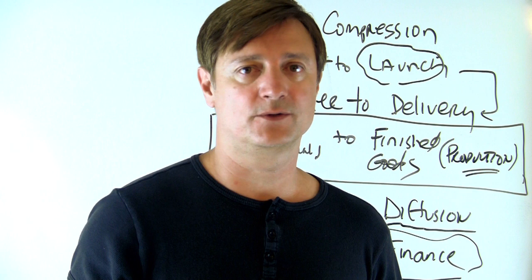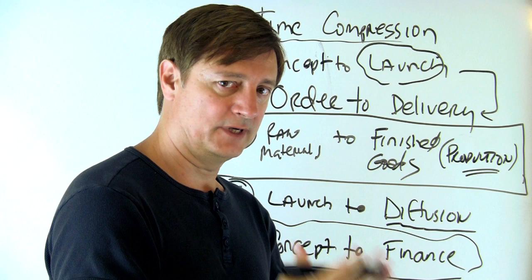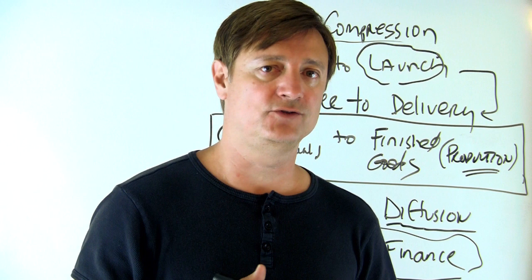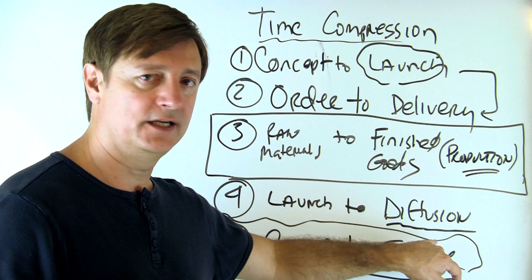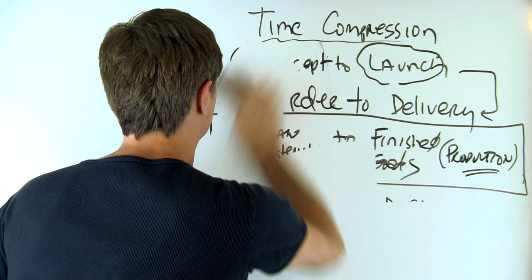If you're in a large corporation, sometimes that's not a problem, but even corporations have to go through budgets and different components. So if you're using time compression and able to develop products from concept to launch quicker, you've streamlined order to delivery, you've figured out how to produce the product much quicker than your competitors, you've figured out the components of post-launch diffusion, and you can finance a concept quickly — then you have an incredible advantage over your competitors.